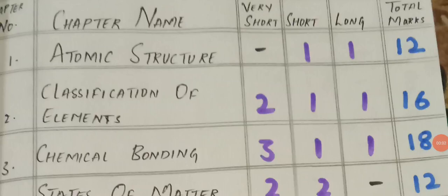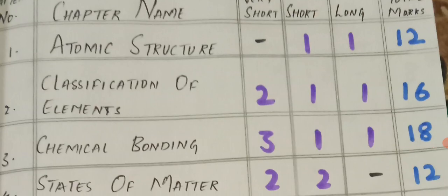Welcome to STA Academy. Today we are going to discuss chemistry inter first year for both MPC and BIPC weightage chapter-wise. This blueprint is very helpful for students at this time to prepare and get good marks. If you prepare according to this blueprint, you will definitely get 60 out of 60.